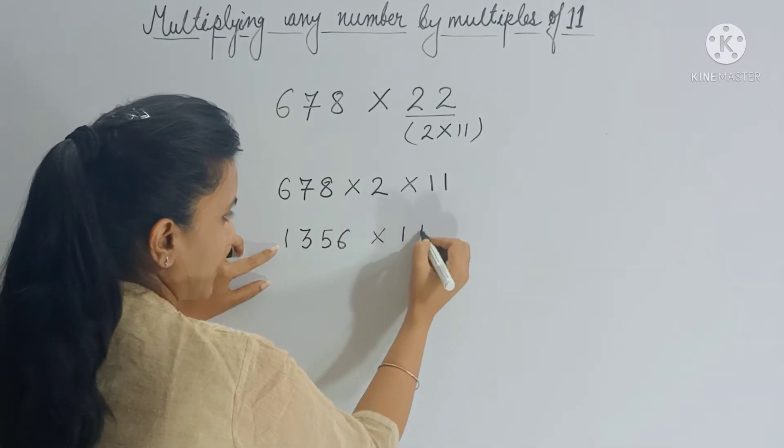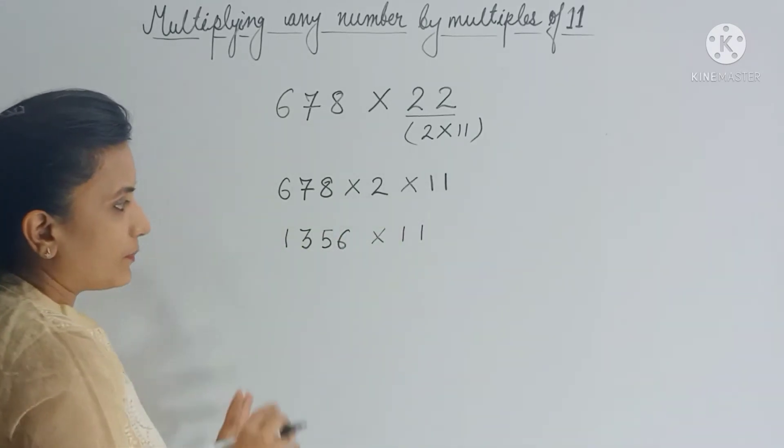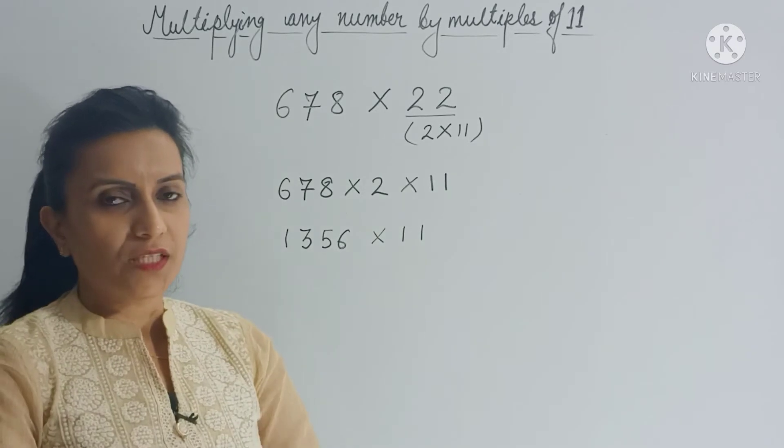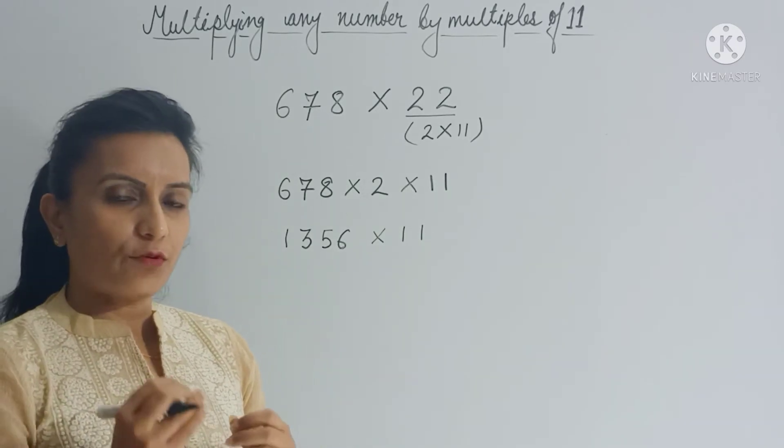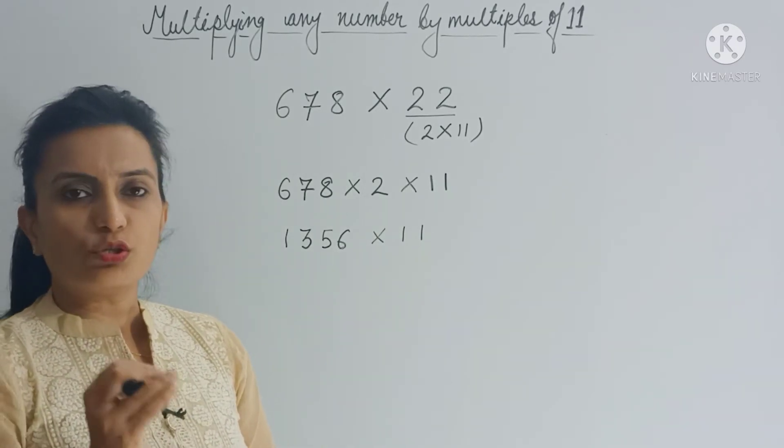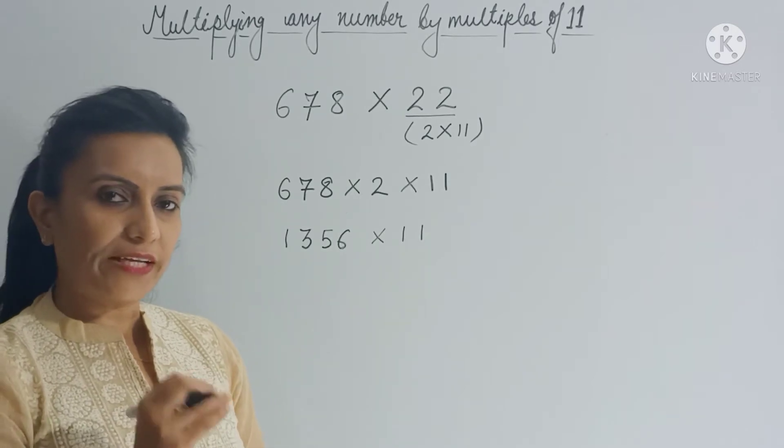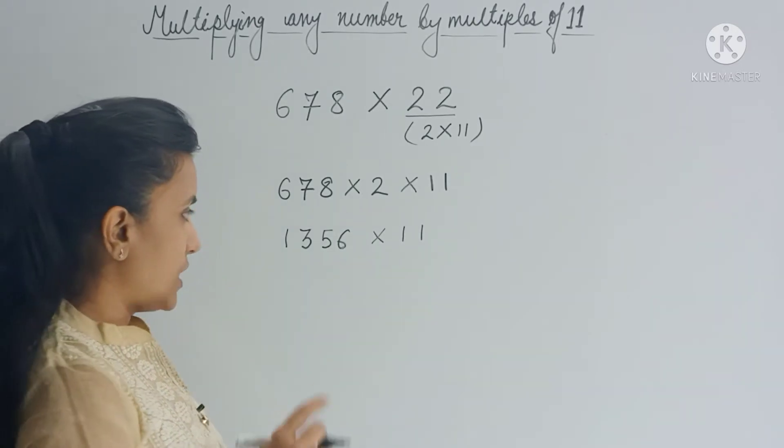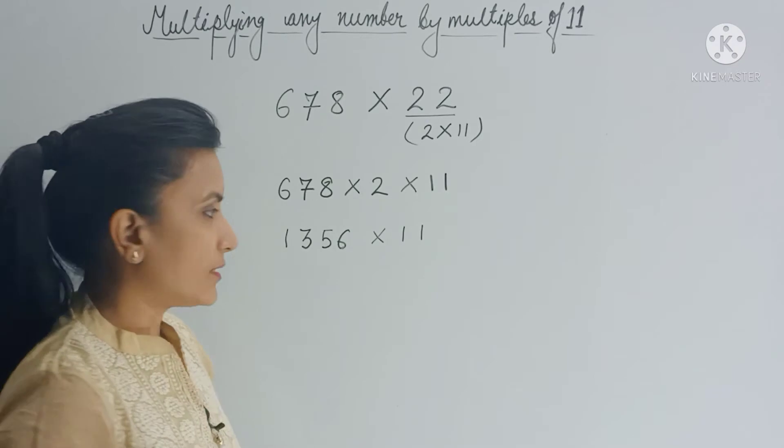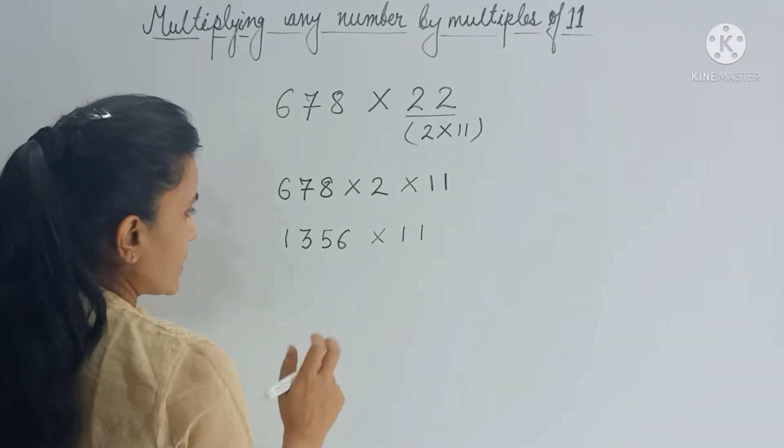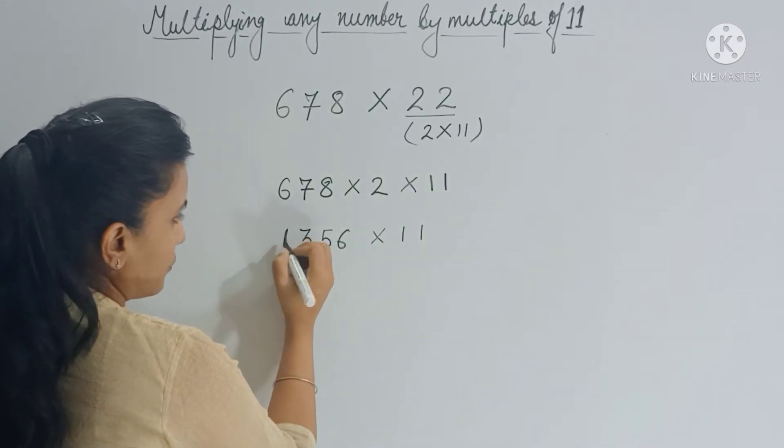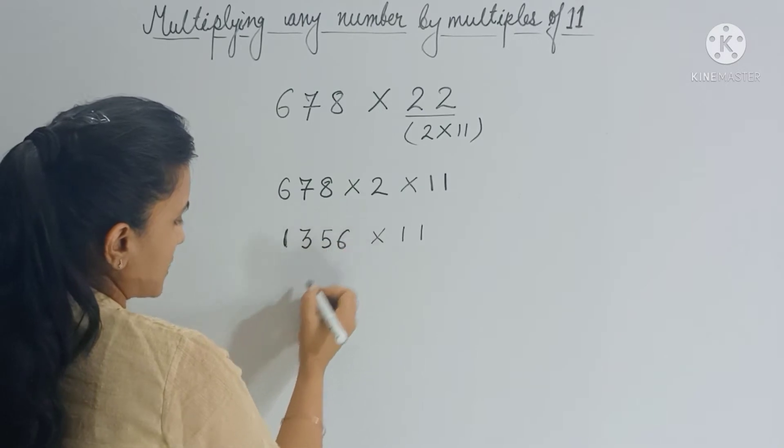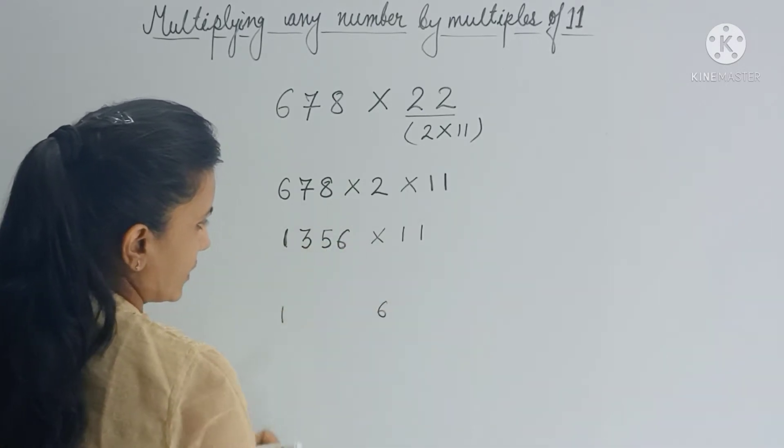Now we have to multiply this with 11. To multiply any number from 11, we have a trick. I have already done a video on that. Those who have not seen that video can find the link in the description box below. So here I will just tell you the method. You have to copy the extreme digits as it is.